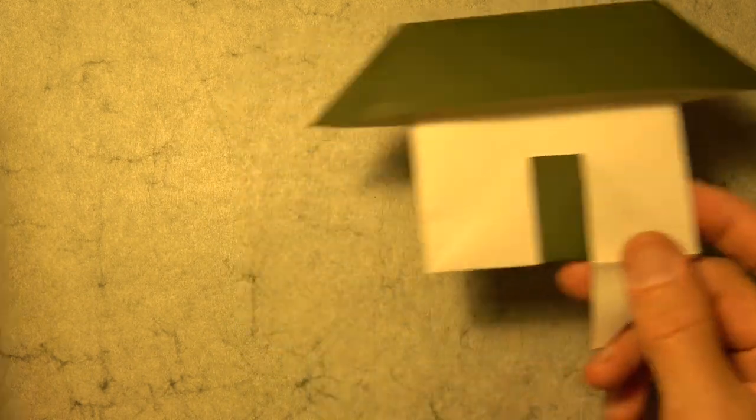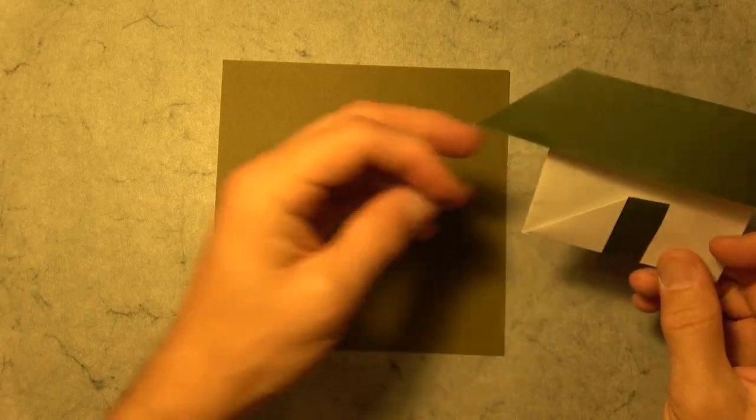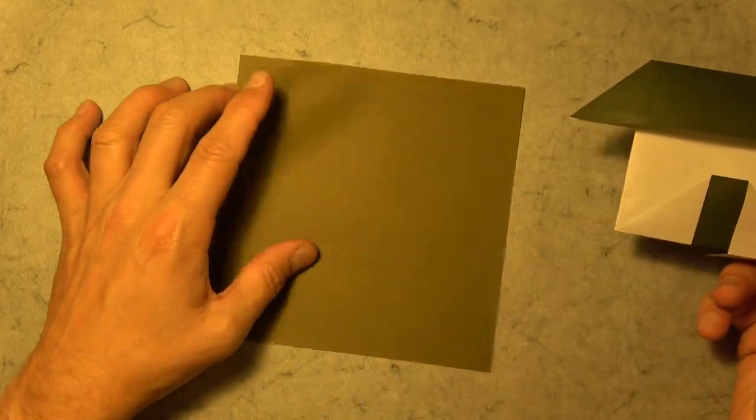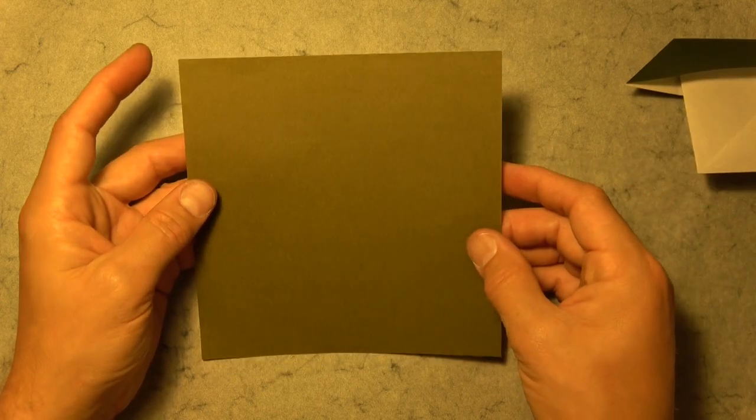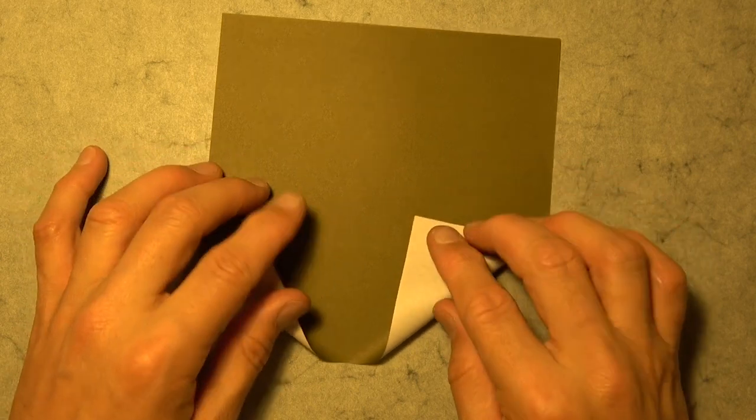So for this model, I used a six-inch square. You could fold it from a sheet of printer paper, but then you won't have the features unless you draw them on. So if you use a sheet of printer paper, I recommend coloring one side. Let's begin with colored side up, and let's fold these two flaps up.